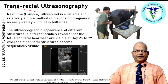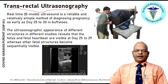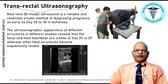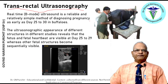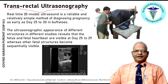Transrectal ultrasonography can be performed in buffaloes very easily. The ultrasound machine is placed on a table, the probe is introduced into the rectum after evacuating feces, and the probe is covered in a sleeve or condom with gel applied. Real-time B-mode ultrasound is a reliable and relatively simple method of diagnosing pregnancy in buffaloes as early as day 25 to 30. The fetus and fetal heartbeat are visible at day 25 to 29, and other fetal structures become sequentially visible.